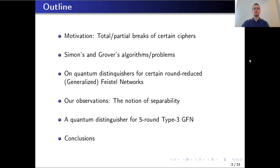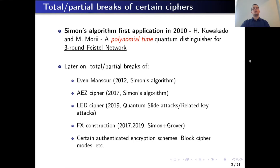The outline of the talk is as follows. We will start with the motivation, which is related to total partial breaks of certain block ciphers. Then we will give a brief overview of Simon's and Grover's problems and related algorithms. Then we will point out constructions of quantum distinguishers for certain generalized Feistel networks, introduce the notion of separability, switch to quantum distinguishers for 5-round type 3 generalized Feistel networks, and conclude by recalling the main points related to separability.